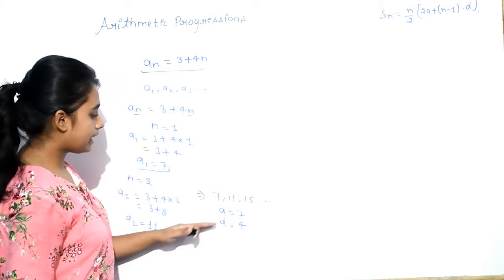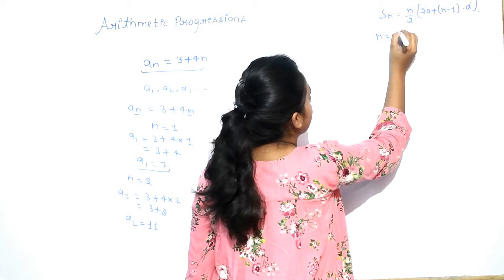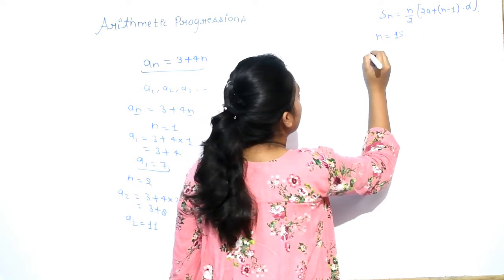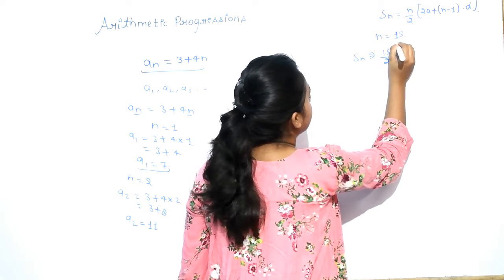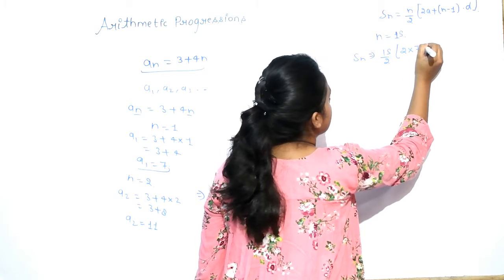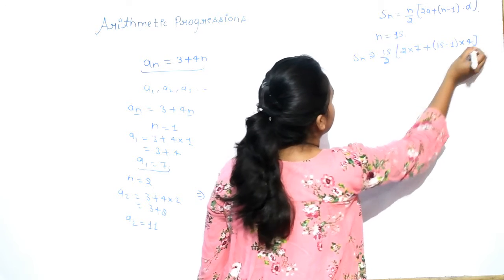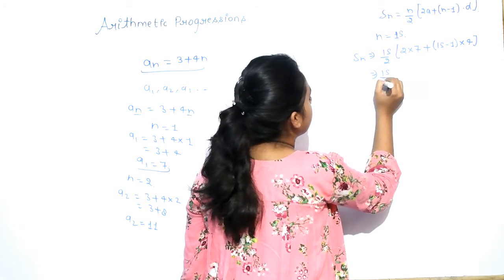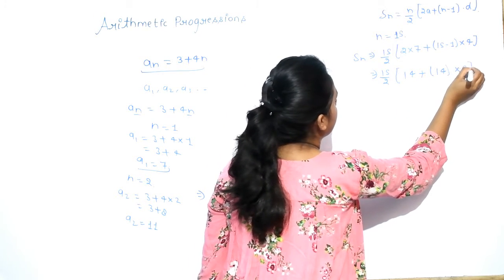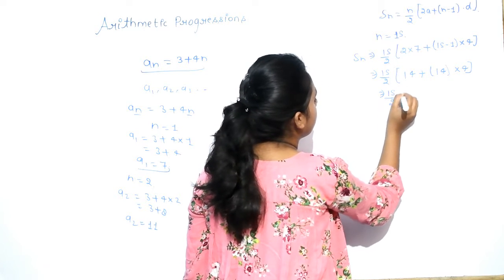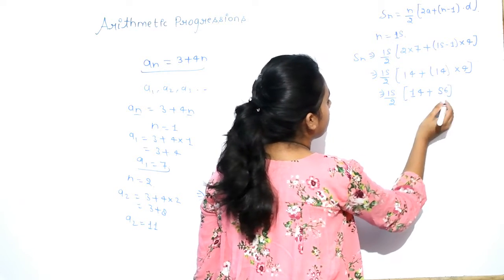Now see, our A is given, D is given, and N is 15 because we have to find the sum of first 15 terms of AP. We will put in this formula: N is 15 upon 2, 2A is our 7, plus 15 minus 1 into 4, that is our D. So now, 15 upon 2, 14 plus 14 into 4. Now, 15 upon 2, and we get here 14 plus 56.